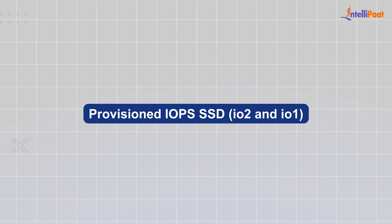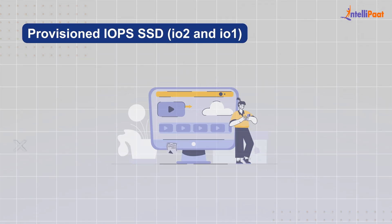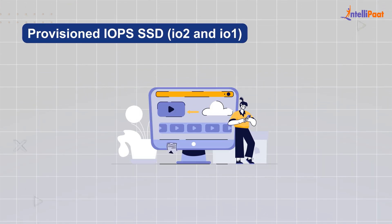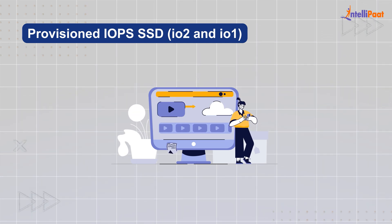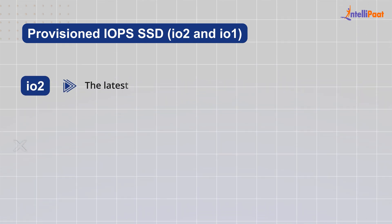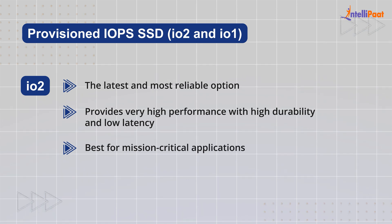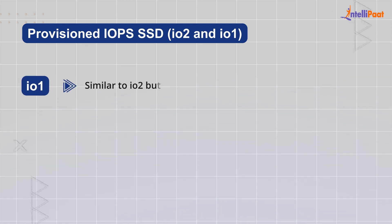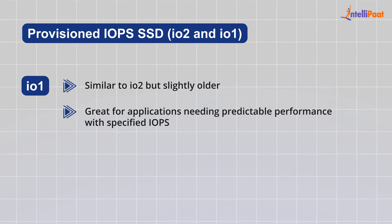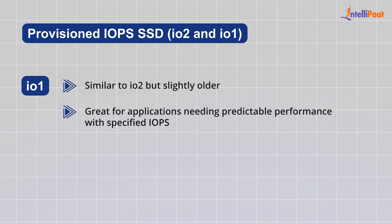Provisioned IOPS SSD — IO2 and IO1 — are for when you absolutely need fast and consistent performance, especially for databases handling lots of transactions or critical applications that cannot afford slowdowns. IO2 is the latest and most reliable option, providing very high performance with high durability and low latency, best for mission-critical applications. IO1 is similar to IO2 but slightly older, still great for applications needing predictable performance with specified IOPS.